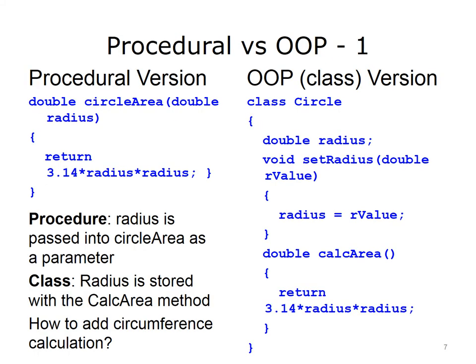Here are two different ways to write a code segment that calculates the area of a circle. The left presents a procedure that has been defined to do this. It has an input parameter for the radius and returns the calculated value of the area, pi times radius squared. On the right side of the slide is a class that has been defined for a circle. It has an instance variable that stores the radius and has two methods — one to set the value of the radius and one to calculate the area of the circle. Note that the calculate area method does not need any input parameters since it stores the value of the radius in the instance variable.